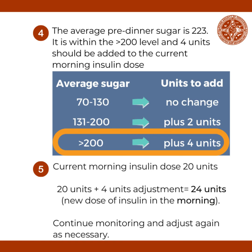Therefore, four units of insulin should be added to the current morning insulin dose. The patient's pre-mixed insulin 70/30 was at 20 units. 20 units plus 4 units adjustment dose equals 24 units — the new pre-mixed 70/30 insulin dose in the morning is 24 units.